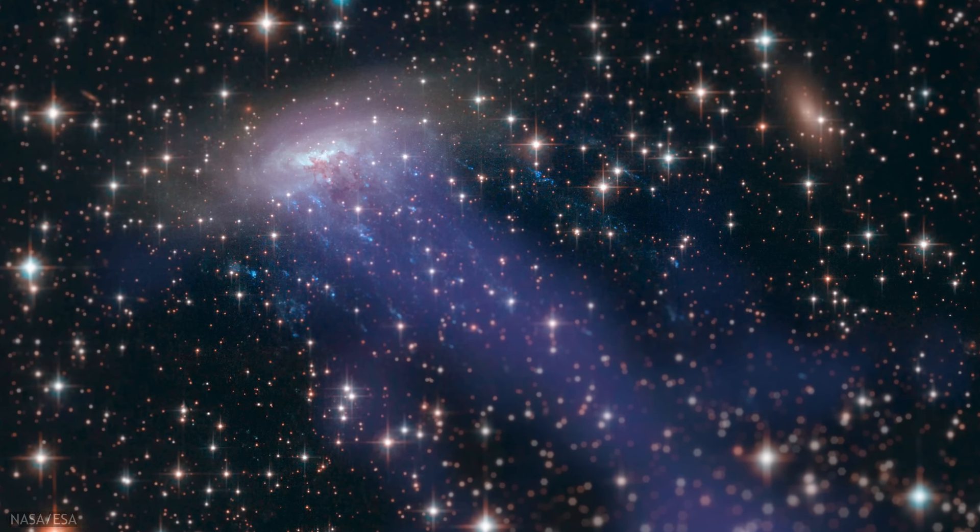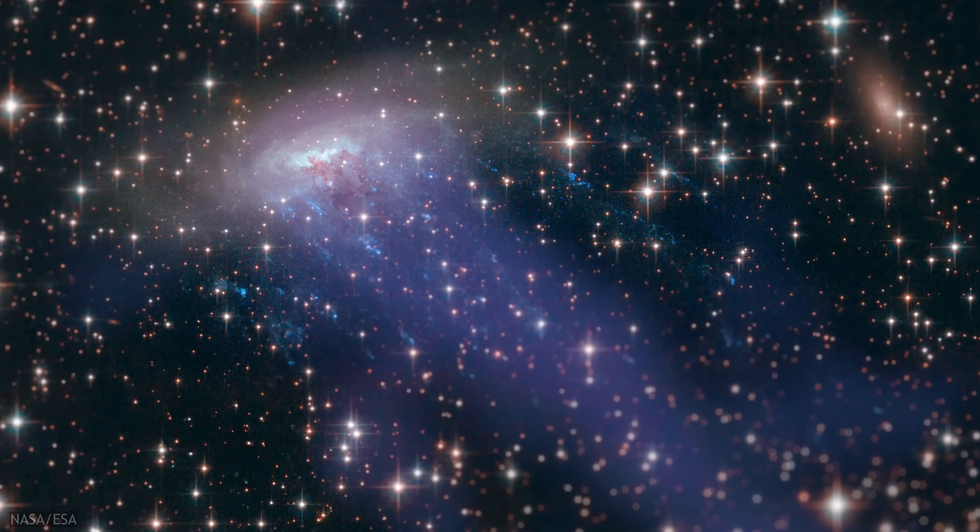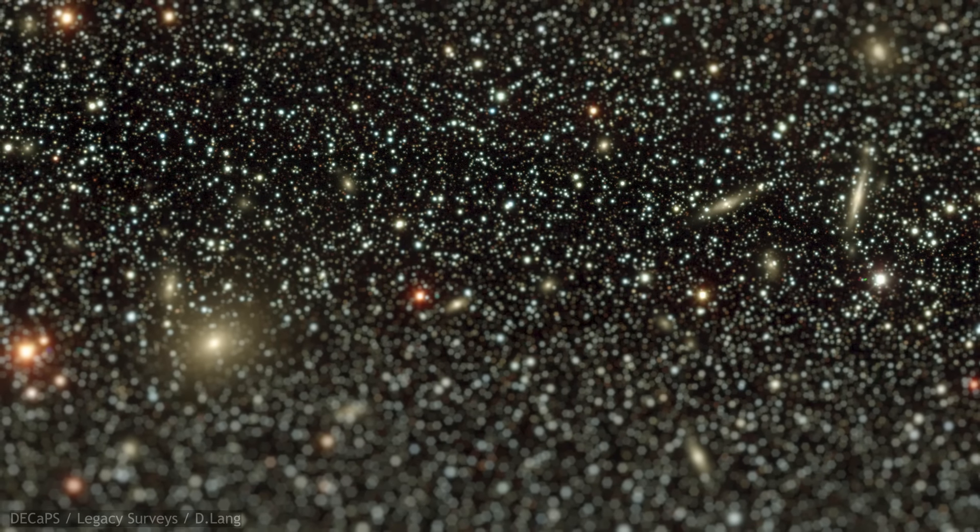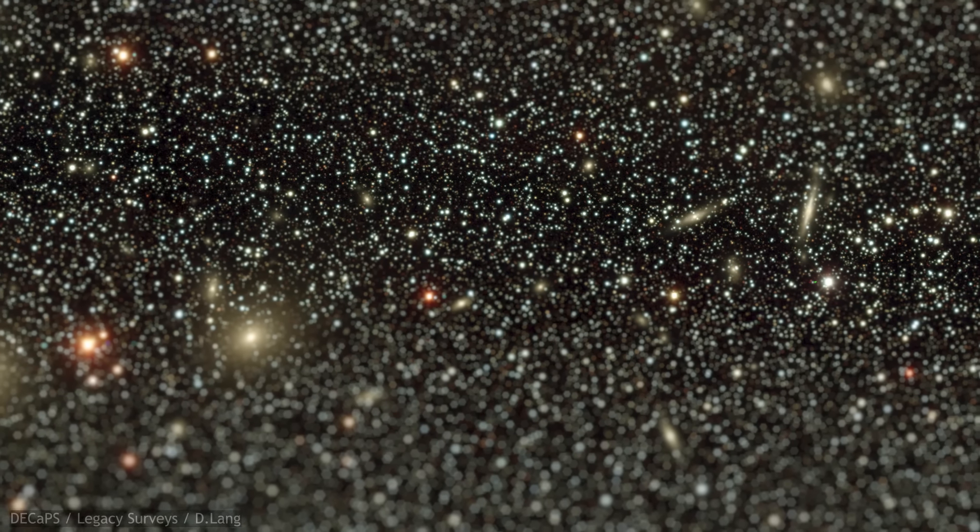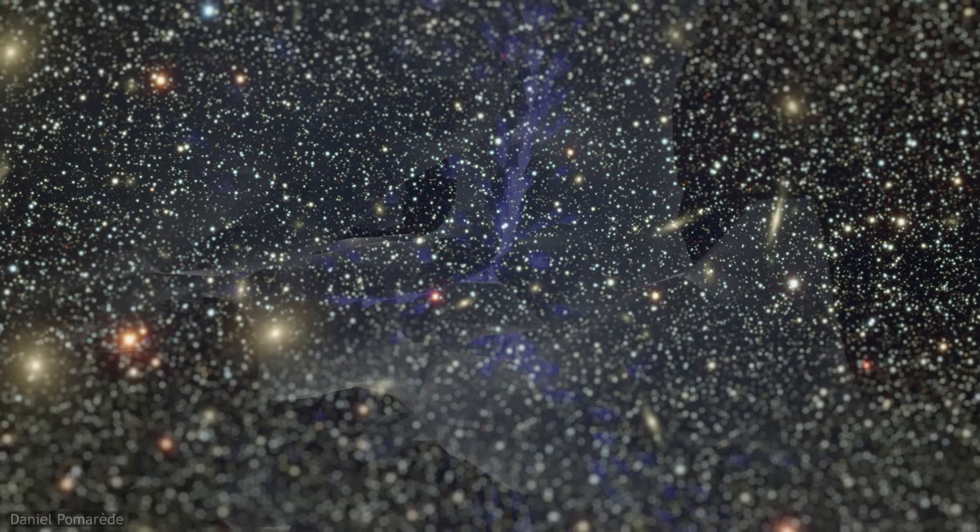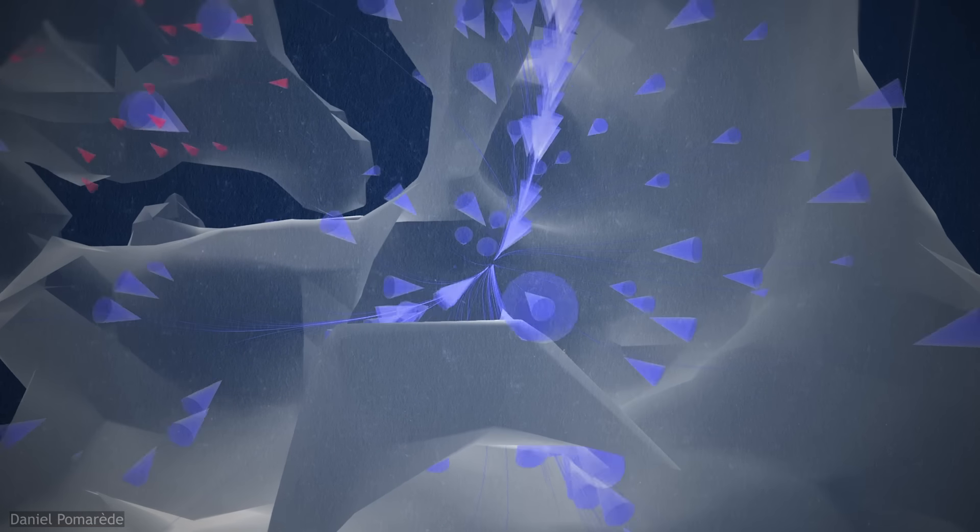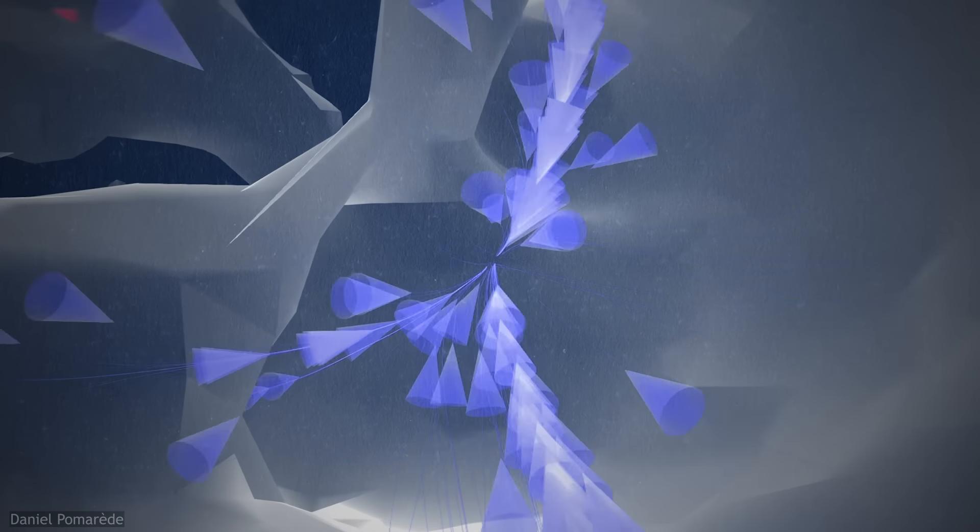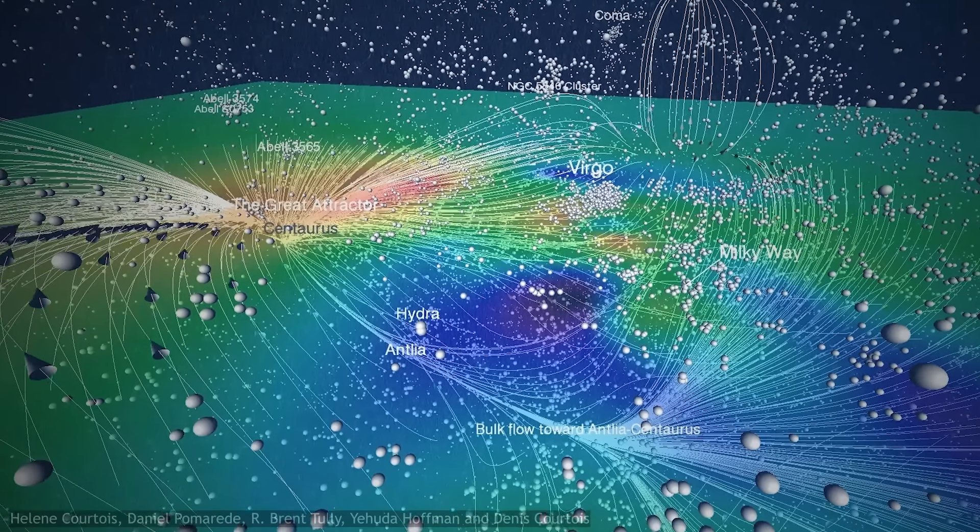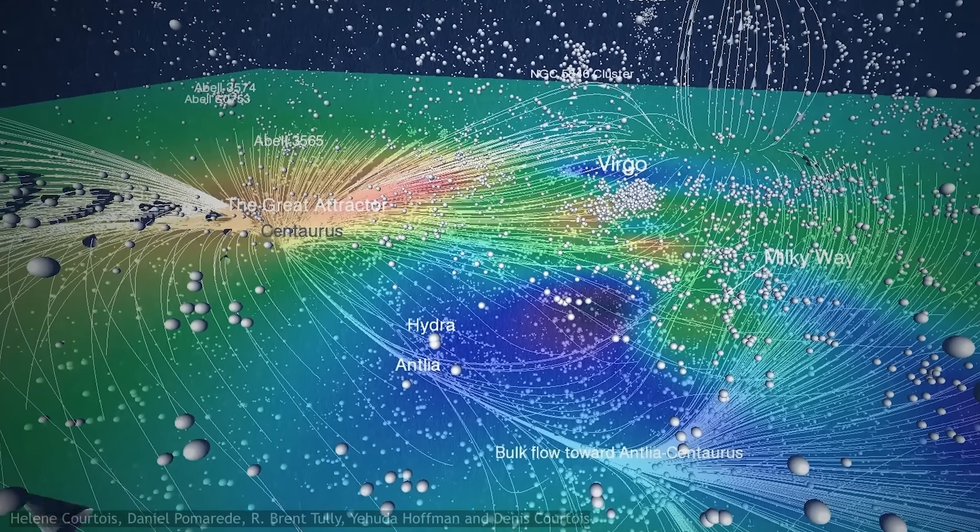For one, even though our understanding of Norma is vague at best, it appears to be a little too small. Even adding in the contribution of its dark matter, Norma's gravitational pull is not quite large enough to account for the speed with which we are moving towards the Great Attractor. In other words, the Great Attractor isn't quite as great as it initially appeared.